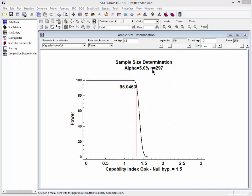As you can see from the title, the sample size required is 297. Incidentally, the graph shows me the power of the test.